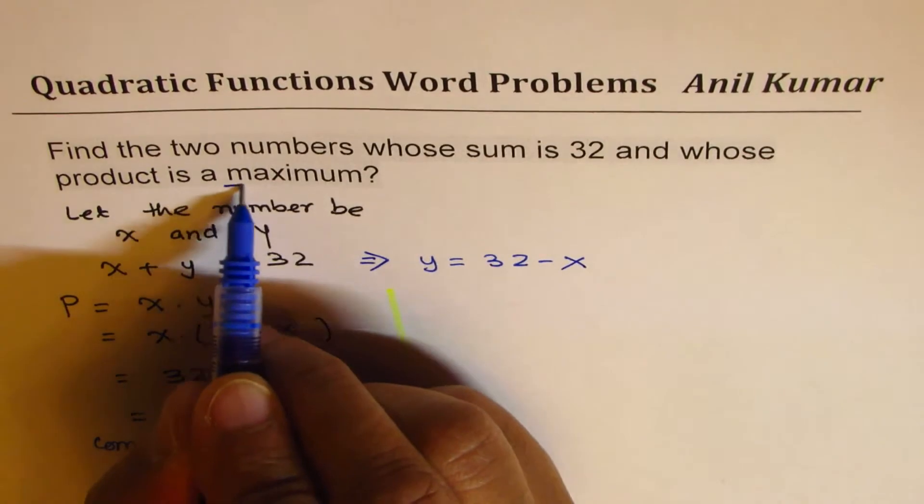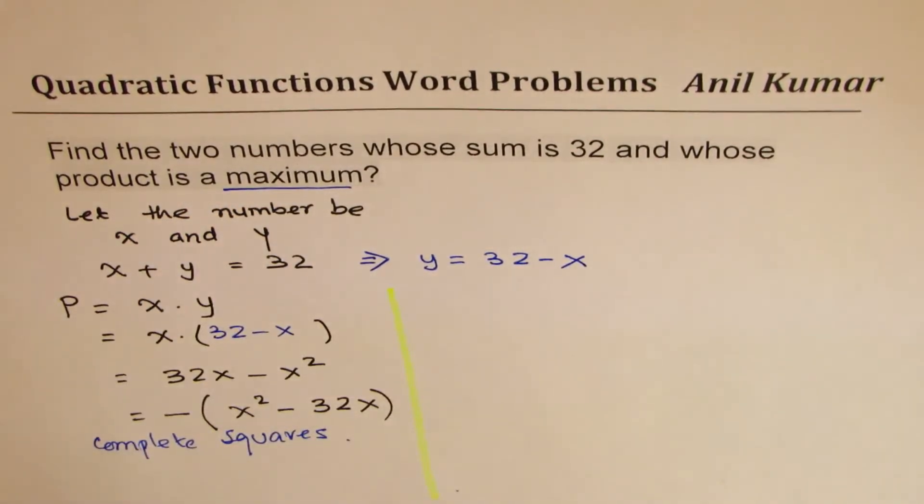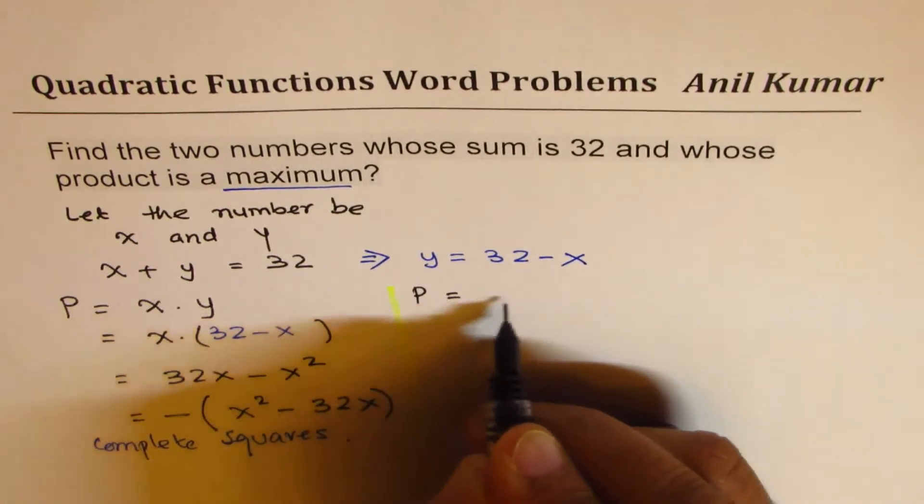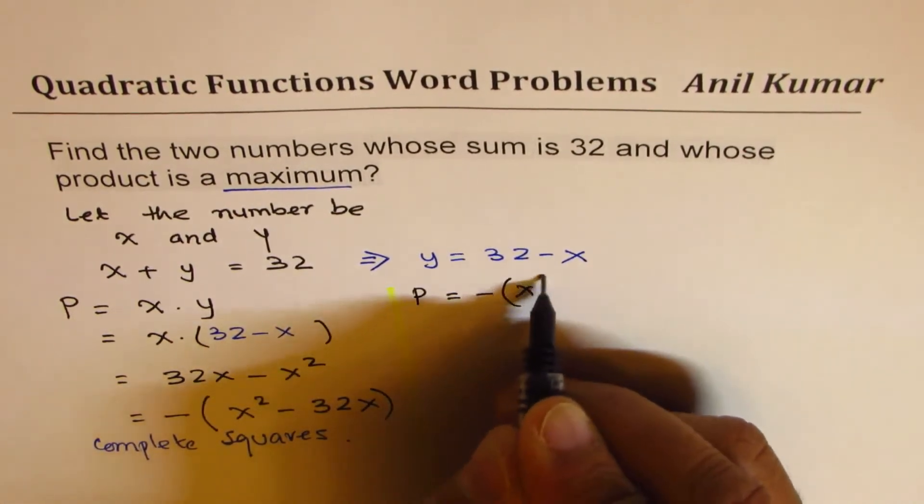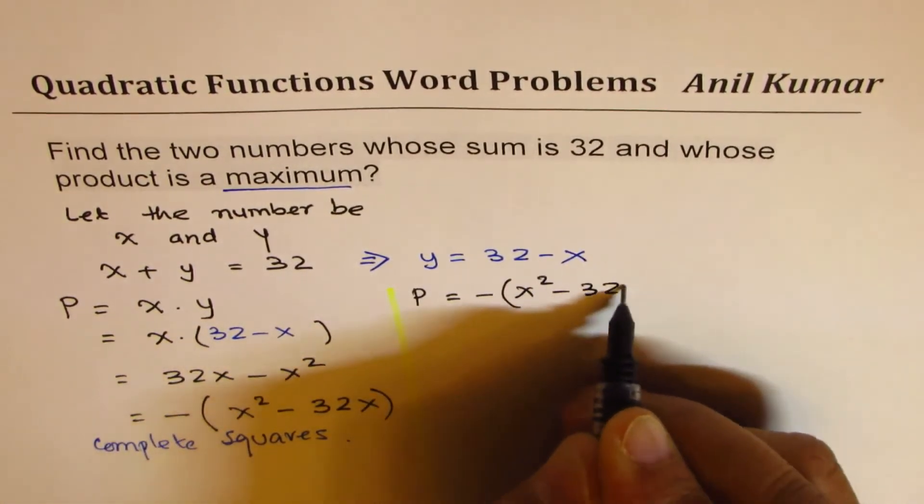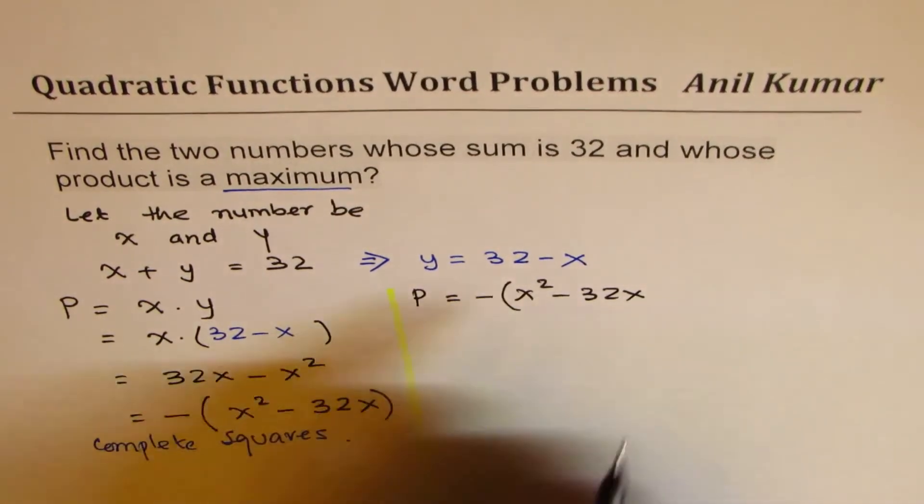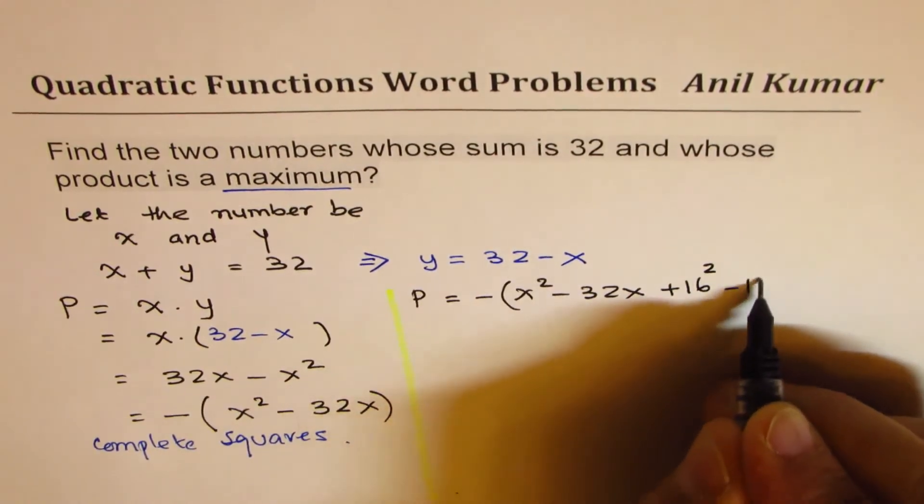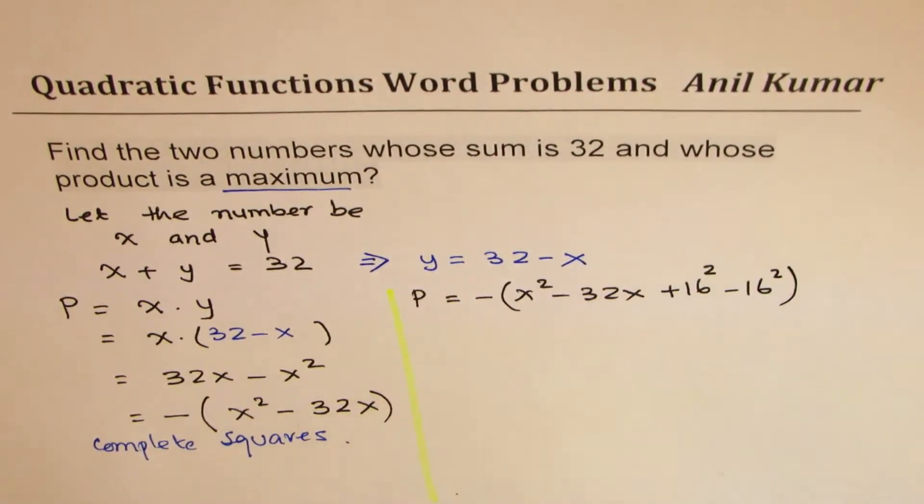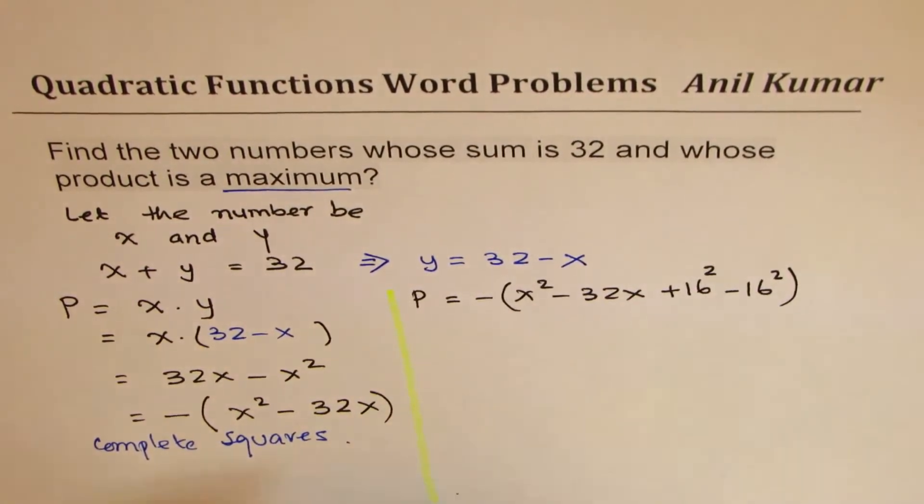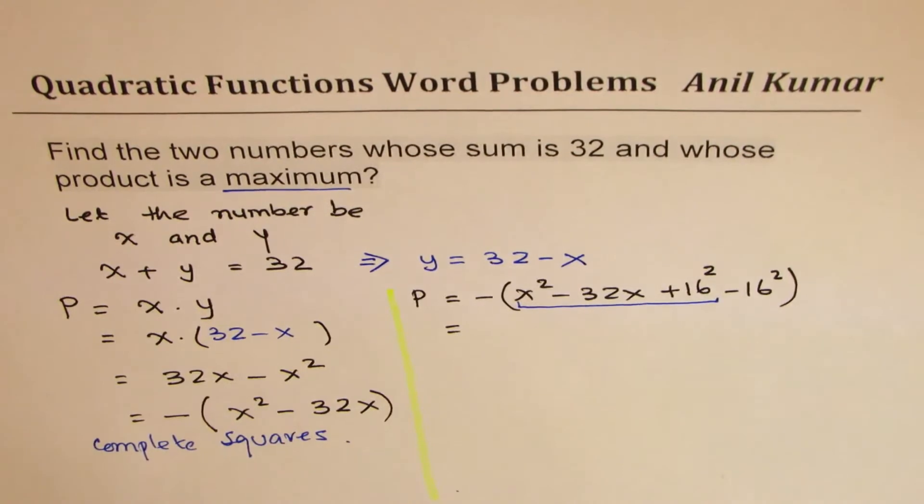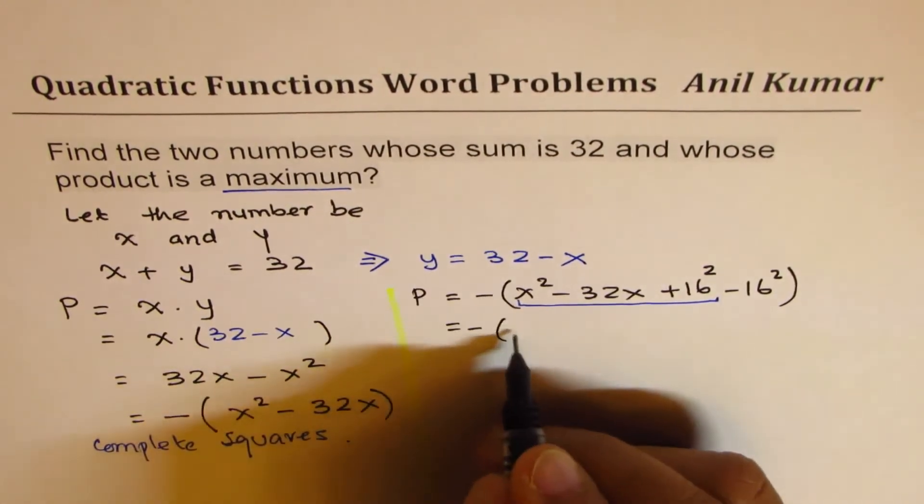Whenever you have maximum or minimum question, that is a preferred method. So let's rewrite, we have product equals to minus, we have x square minus 32x. Completing squares means take half of this number which is 16, square it, add and subtract this number. The first three numbers will always be a perfect square, that's how it gets its name.